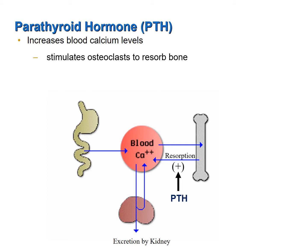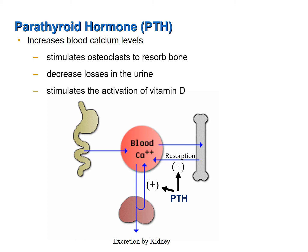Parathyroid hormone increases blood calcium by, one, targeting osteoclasts and stimulating those osteoclasts to break down or resorb bone. As bone is broken down and resorbed, that makes calcium and phosphorus available to the blood, raising blood calcium levels. Parathyroid hormone also targets the kidneys and decreases the amount of calcium lost in the urine, causing the kidneys to retain more calcium in the blood, which also helps raise blood calcium levels. Lastly, parathyroid hormone also stimulates the activation of vitamin D.